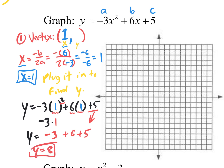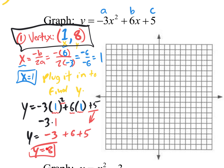So y equals 8 — that's the y value of our vertex. The vertex x value is 1, and the y value is 8. Ladies and gentlemen, this is the most important point: the vertex is (1, 8). On the first quiz on this section, I'll give you a function and tell you to find the vertex — use the formula to get the x value, plug it in to find the y value, and write down (1, 8).